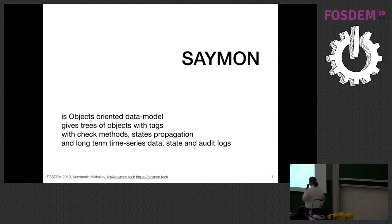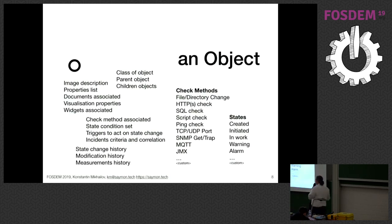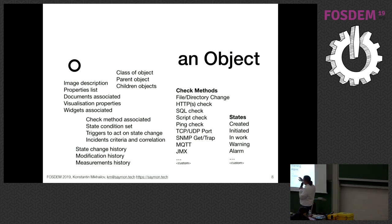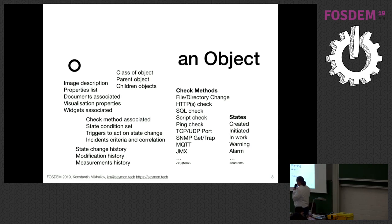Simon has an object-oriented data model, which gives you trees of objects with check methods, state propagation, and long-term time series database capabilities. The object is the main thing. There are many built-in checks, and each object can change its state. Objects are all related to some kind of classes. There can be a parent object, multiple parents, children, and it can be a huge tree of any kind of nature you want.